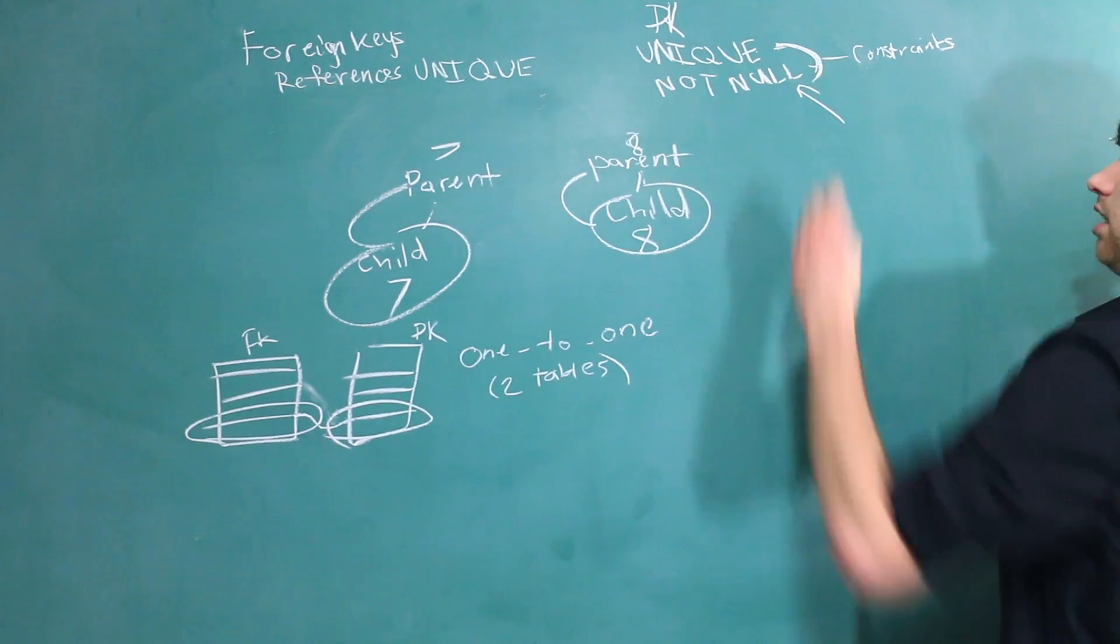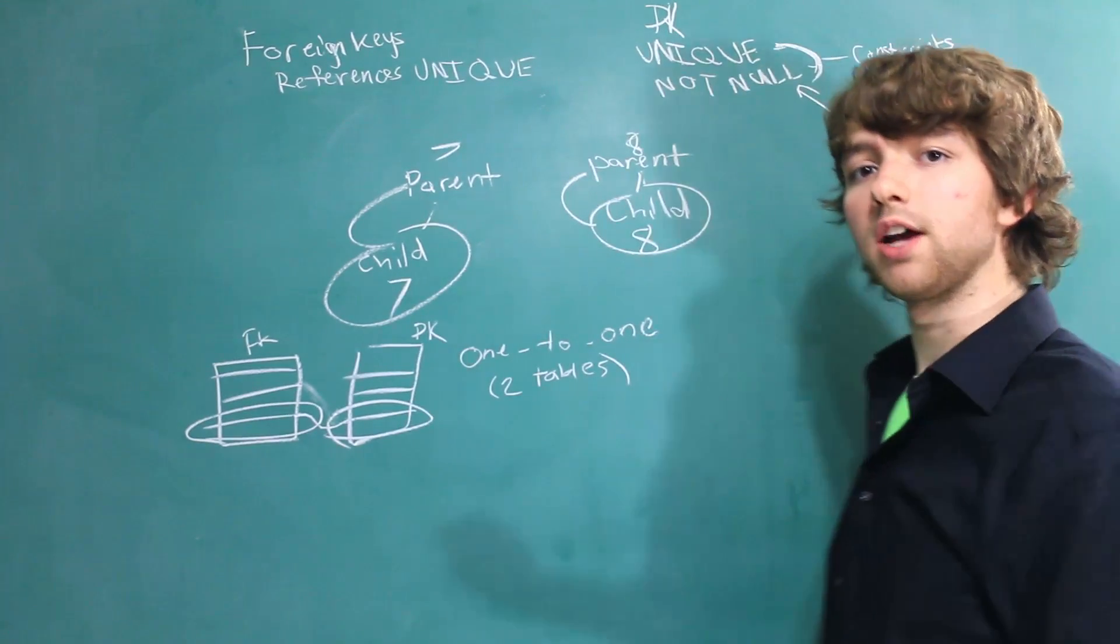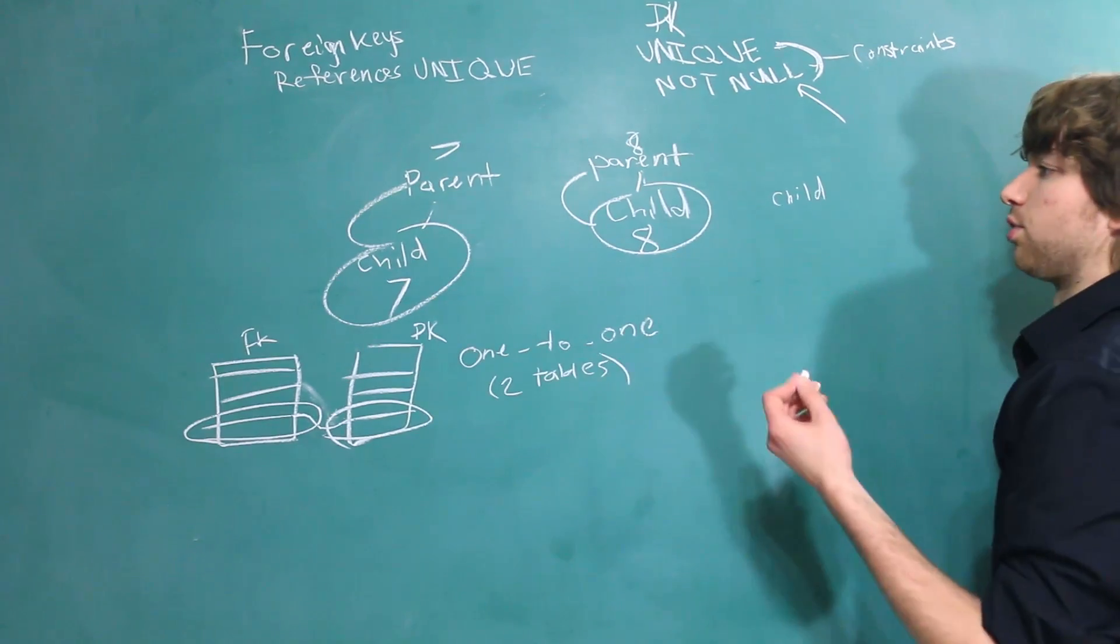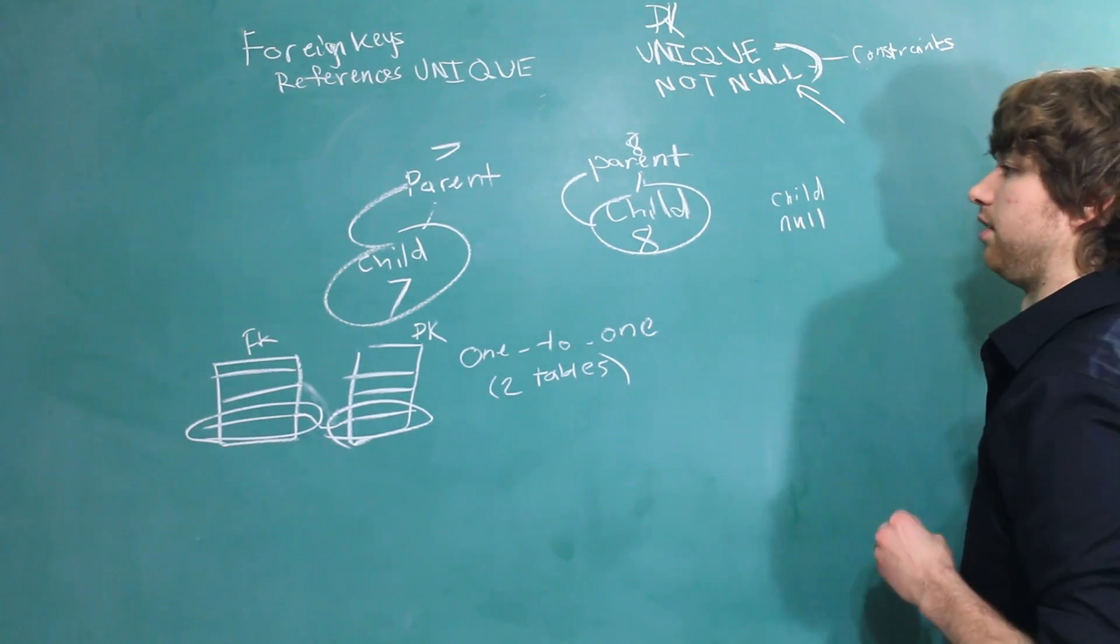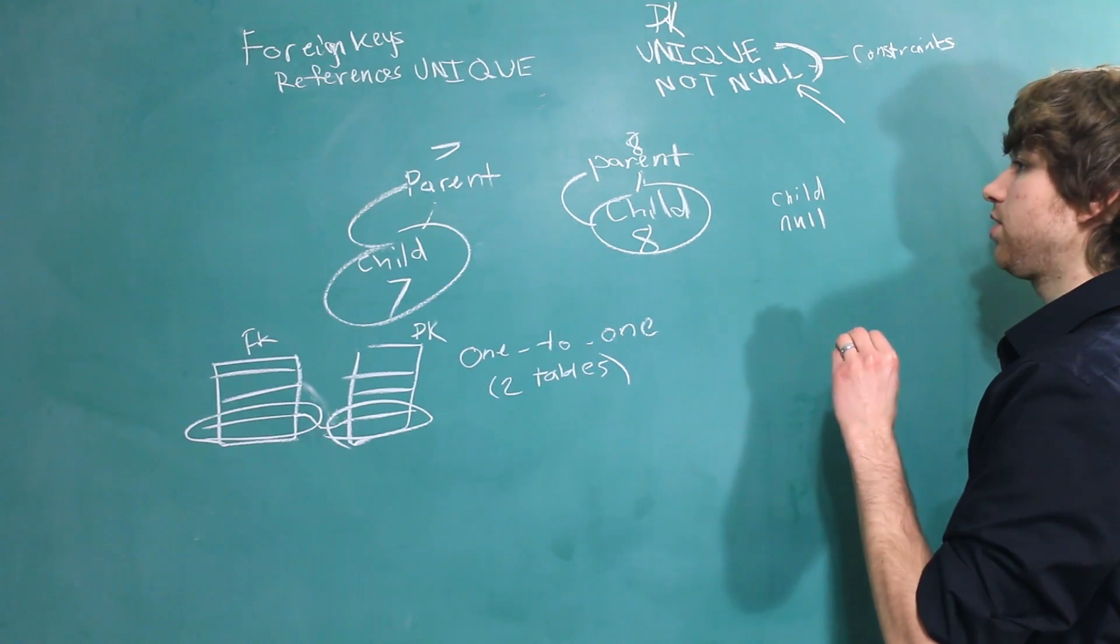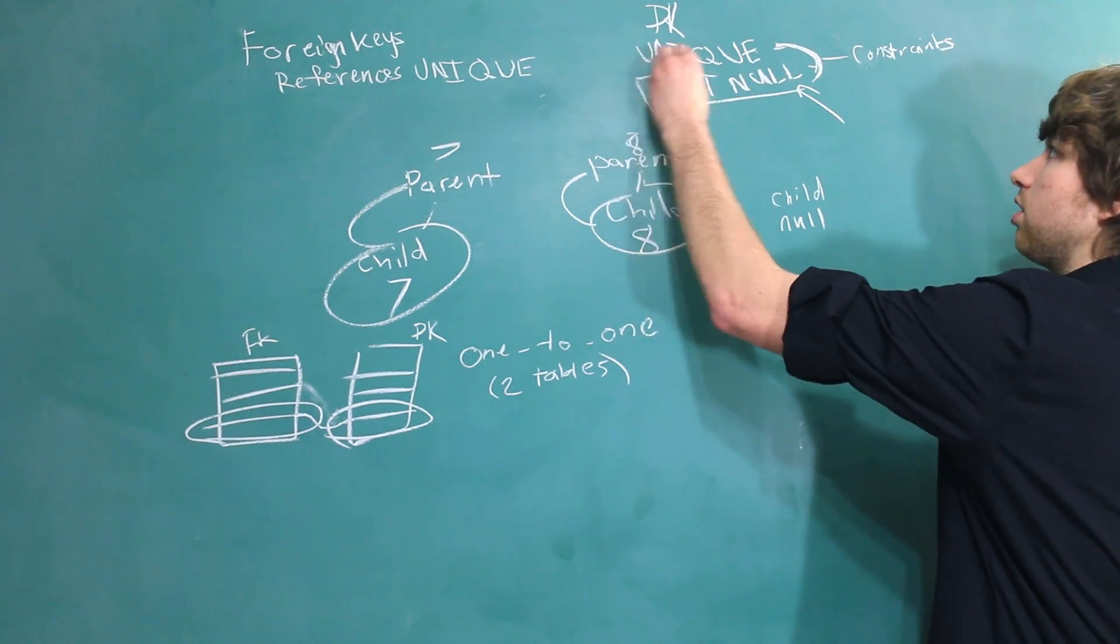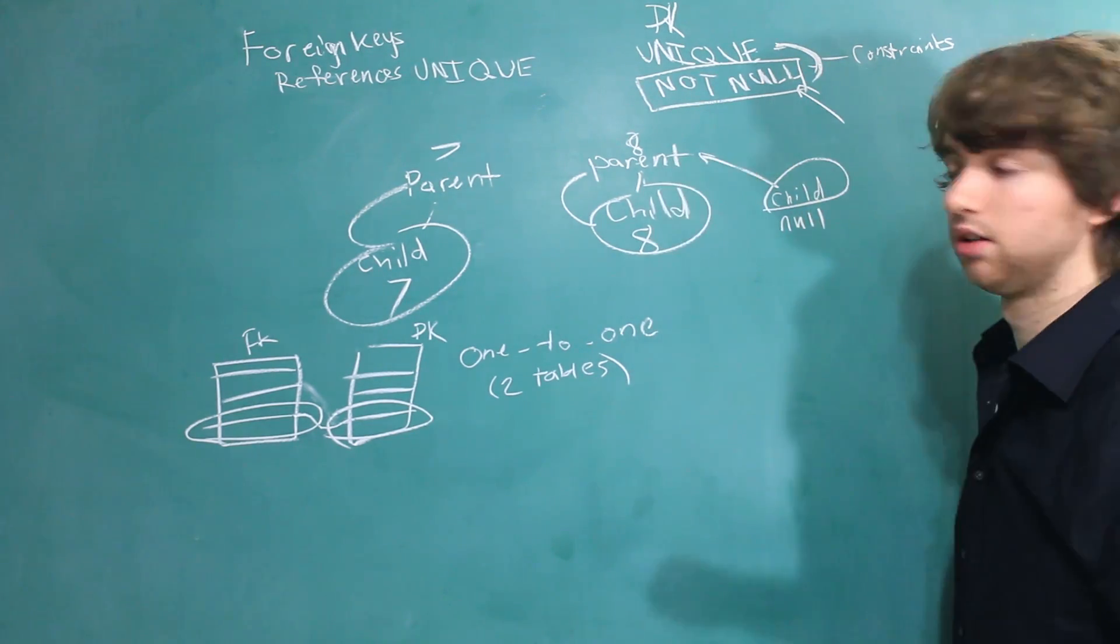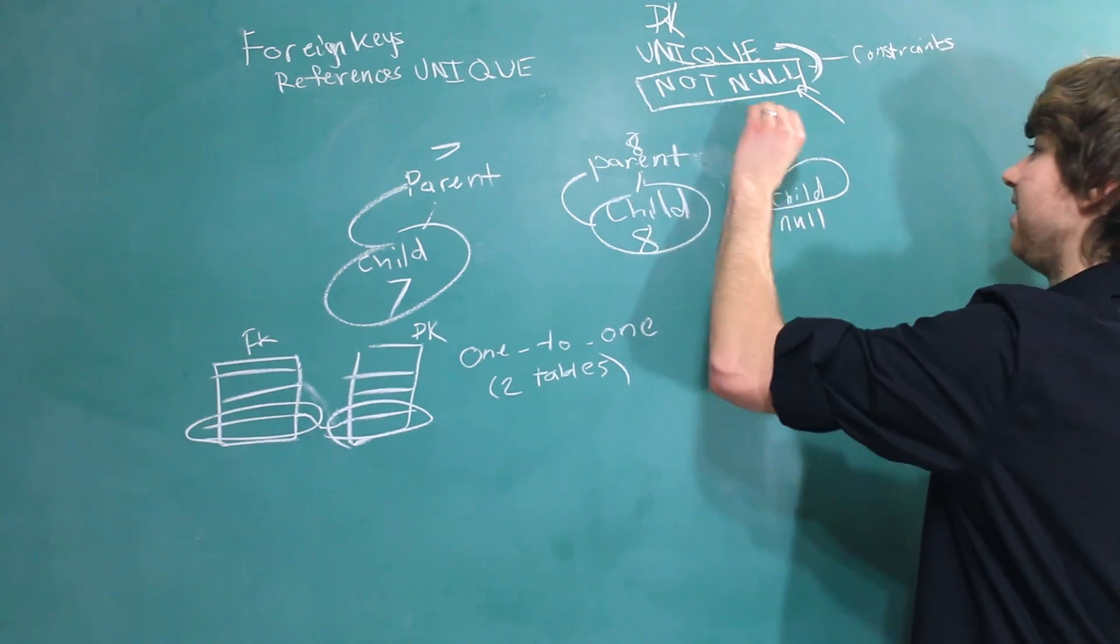Now, what about the not null constraint? What that's going to do is basically force every single child to have a parent. So, if we have another child over here, we could theoretically have a null for the value of what the parent is. And in that situation, there would be no parent. But if we say not null, we're basically saying every single child has to have a parent. But if we're using unique, we couldn't do that. We'd have to point it to a different parent.